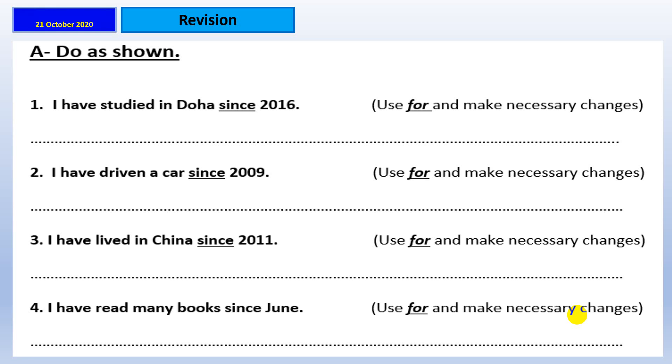Now, what we are going to do now, we are going to correct the sentence according to the bracket. Okay, have a look at the first one. I'll make it for you. I have studied in Doha since 2006. Instead of since, I'm going to use for. So, I'm going to change the sentence. So, the answer will be for 14 years. Got the point? That's right. We use since for specific time. Now, we use for for duration times.